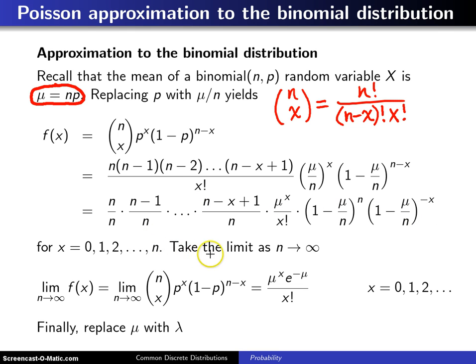We're now going to take the limit as N goes to infinity. That's going to change the support. Instead of going from zero up to N, it'll go from zero to infinity. In the limit as N goes to infinity, this of course will always be a 1, but in the limit as N goes to infinity, N minus 1 over N also goes to 1. And in fact, all of these terms go to 1.